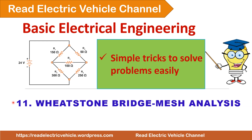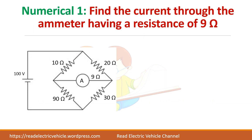In this video, let us see how to solve Wheatstone bridge problems using mesh analysis, and there are some tricks to easily write the matrix. The first problem is a Wheatstone bridge where you have to find the current through the ammeter, which has an internal resistance of 9 ohms. Since it is an unbalanced bridge, you will get some current through the ammeter — let us find what it is.